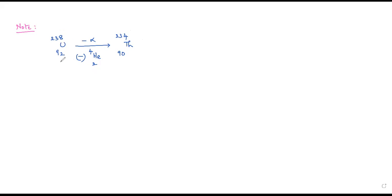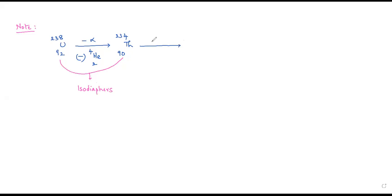If you look at the relation between these two, they are isodiaphores to each other. That means when a nuclide emits an alpha particle, the parent and product are isodiaphores to each other.